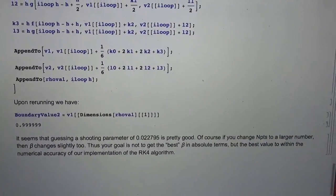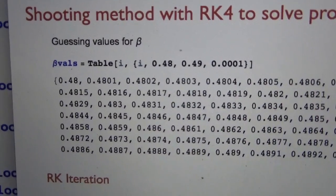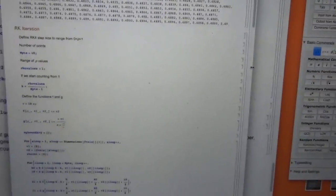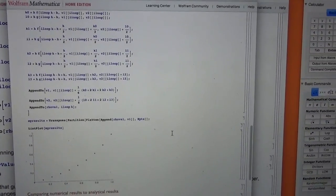As far as automating this, if you wanted to, you could take and pick beta values like this, make a table of them. Once you had a table of them, you could plot a solution.